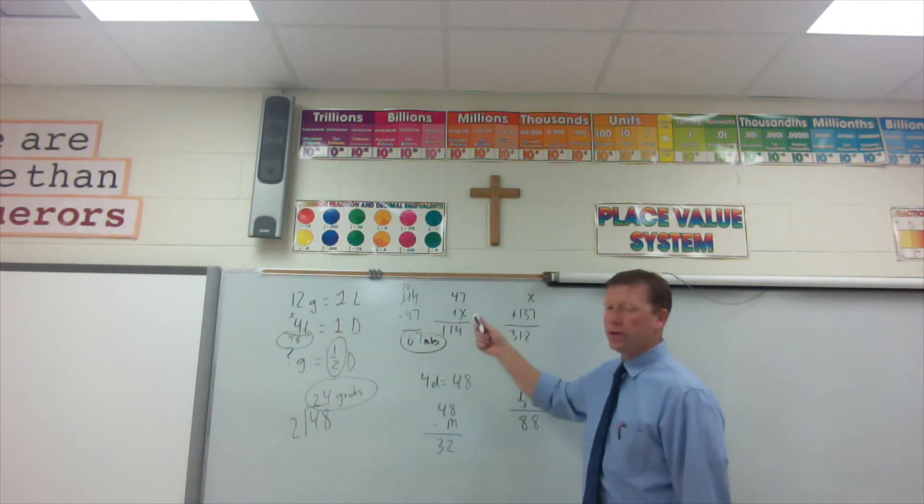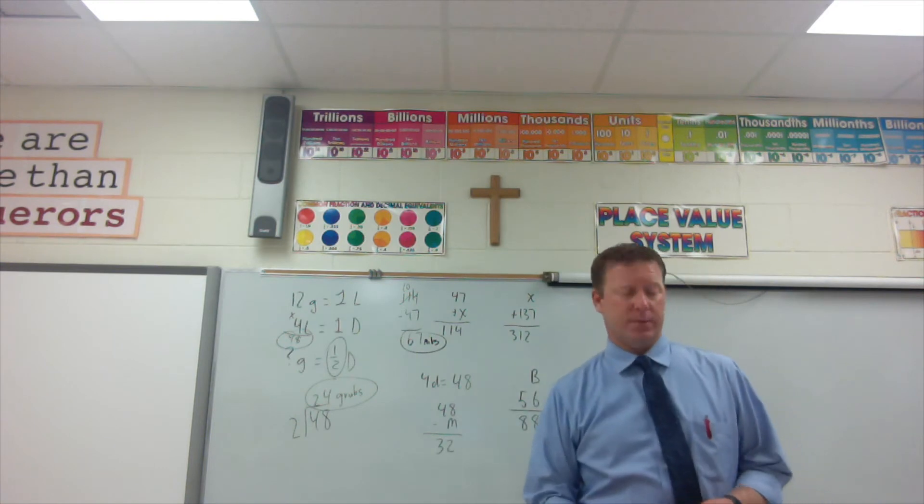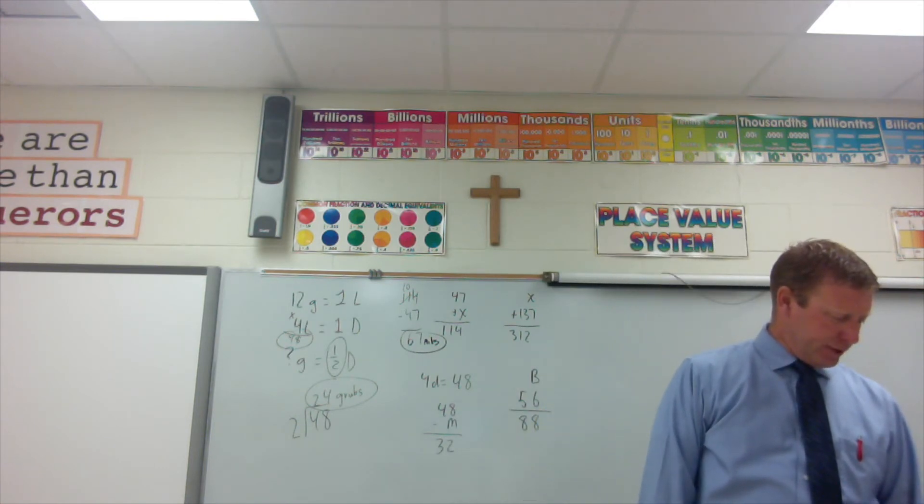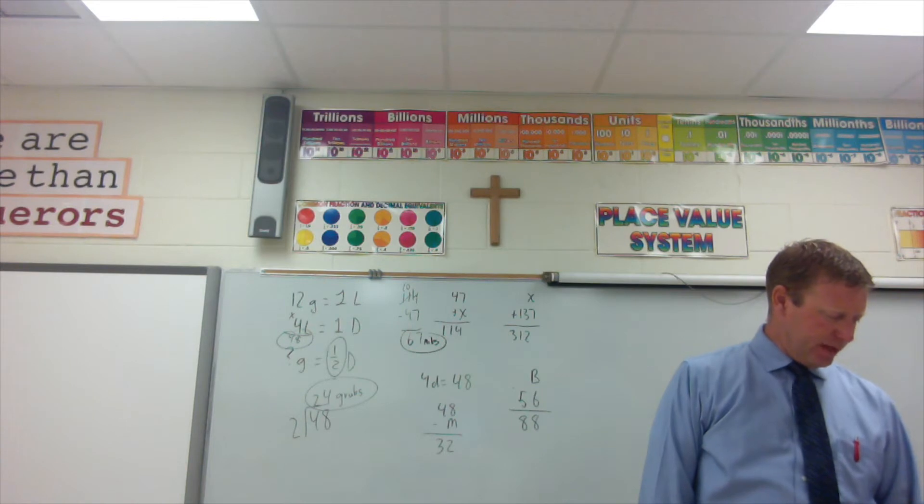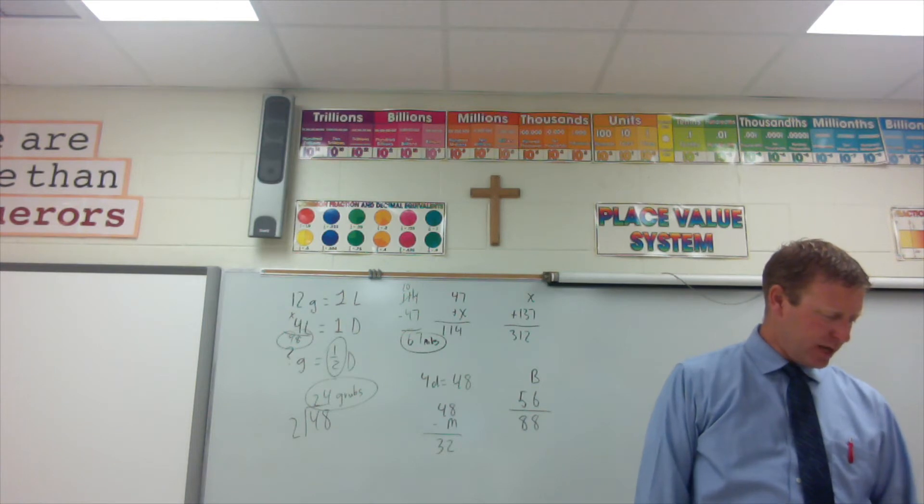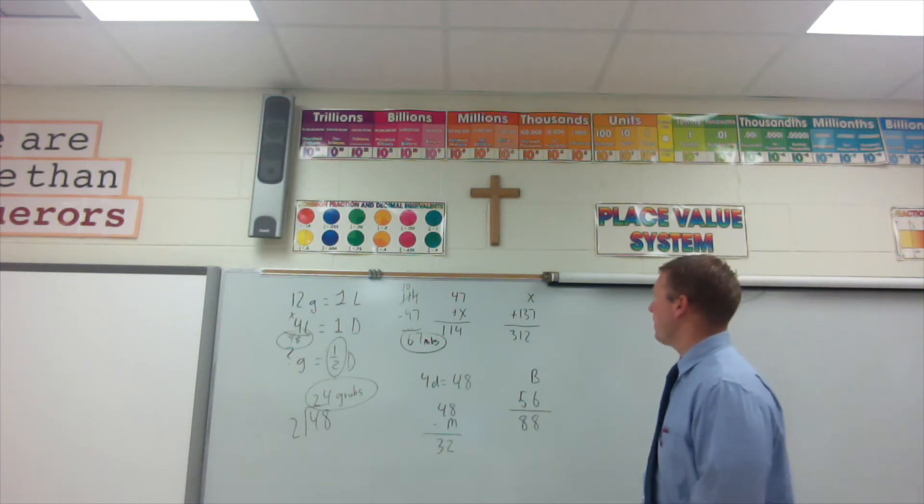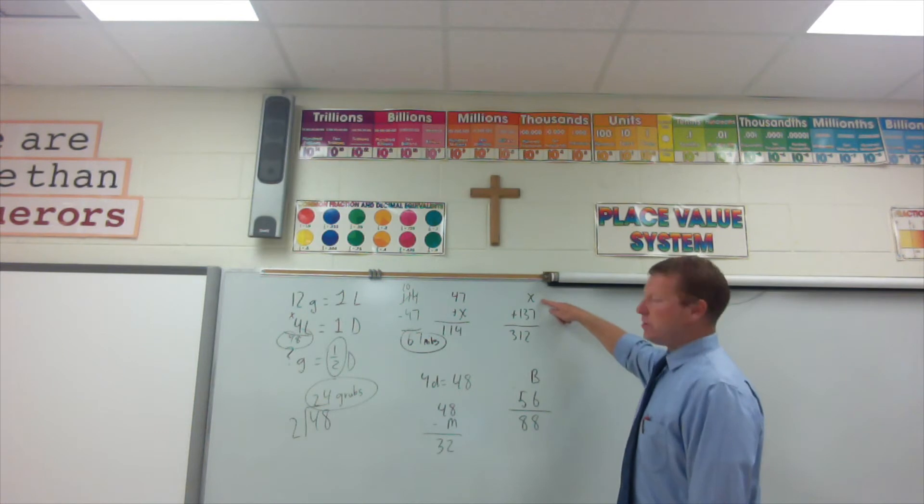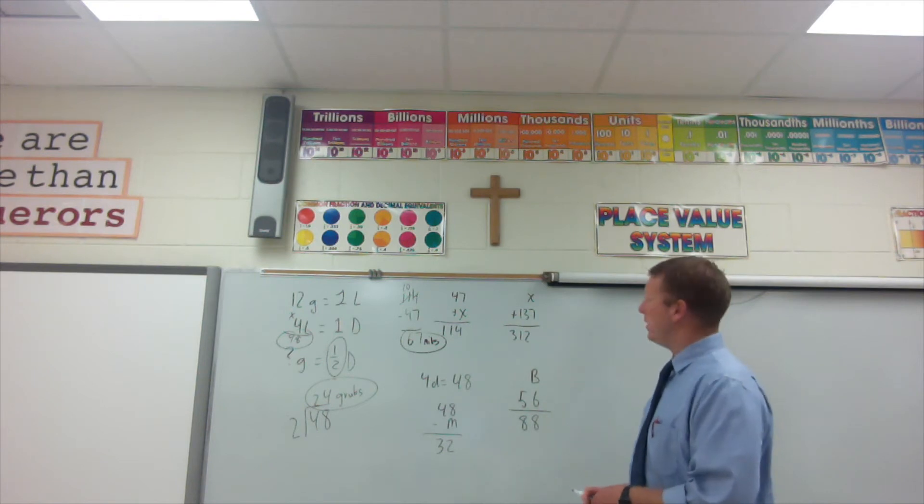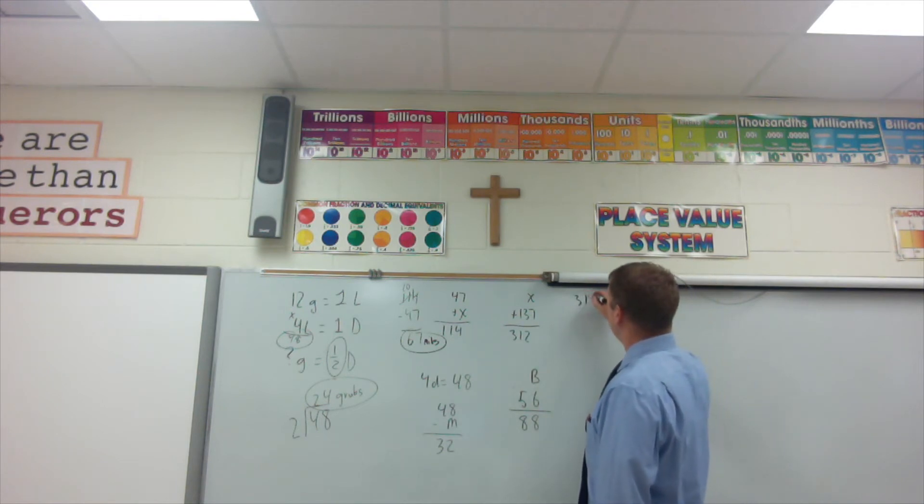He drove 67 miles that day. Notice the addition thought pattern solved with subtraction. Number two. The first scout troop encamped in the ravine. A second troop of 137 scouts joined them, making a total of 312 scouts. How many scouts were in the first troop? I don't know how many scouts were in the first troop. I know the second one showed up with 137 to give me a grand total of 312. Missing something in addition? Solve this one through subtraction.